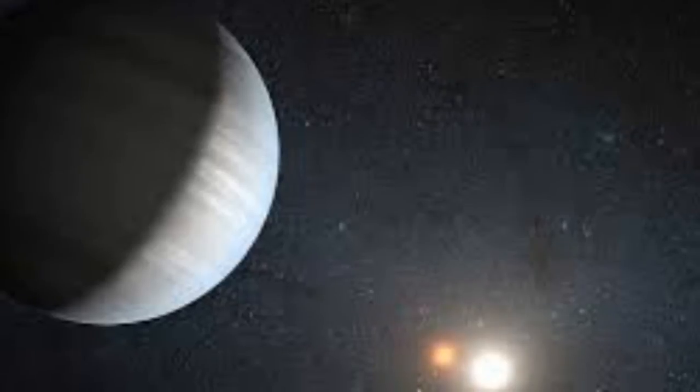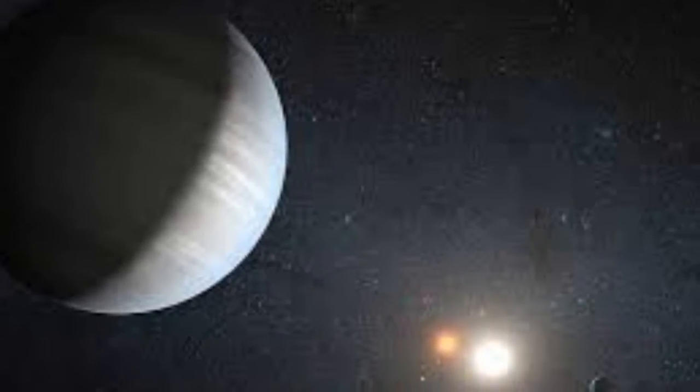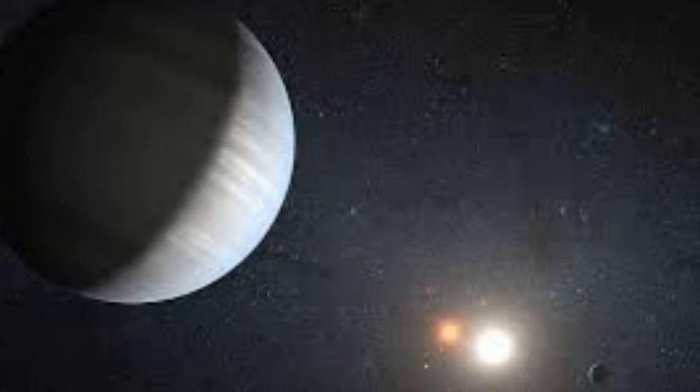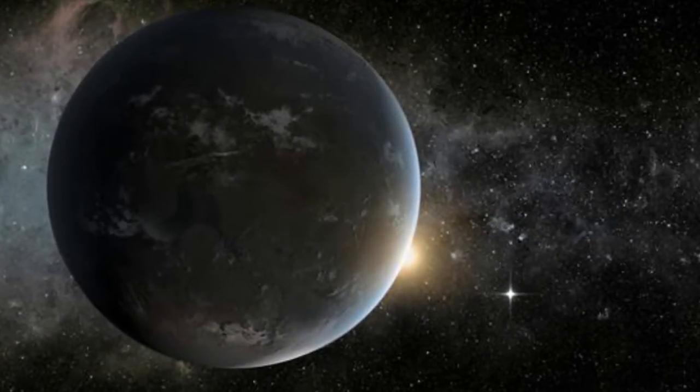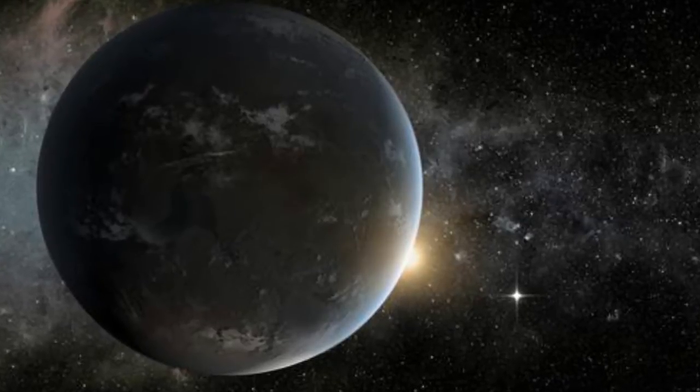The change of orientation of the planet's orbital plane, known as precession, brought it into proper alignment halfway through the space telescope's lifetime, allowing three transits to be observed before the end of the mission.